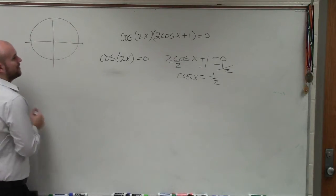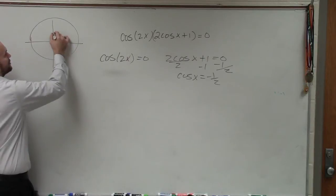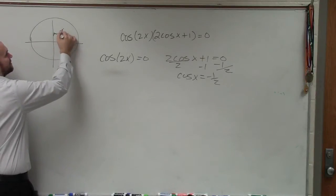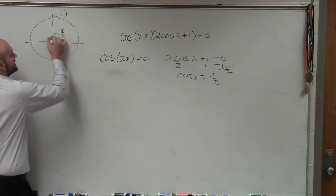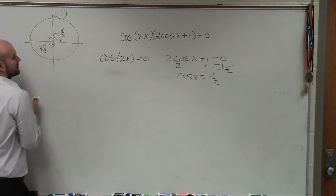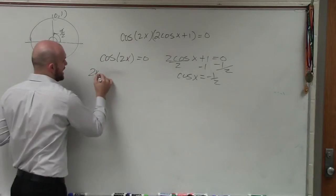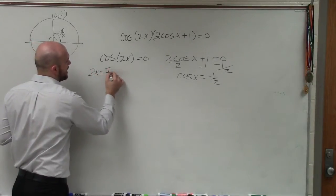And I'll say that cosine of 2x equals 0, well, that occurs at 2 points. You could say at pi halves, right? That's at 0, 1. And at 3 pi halves.